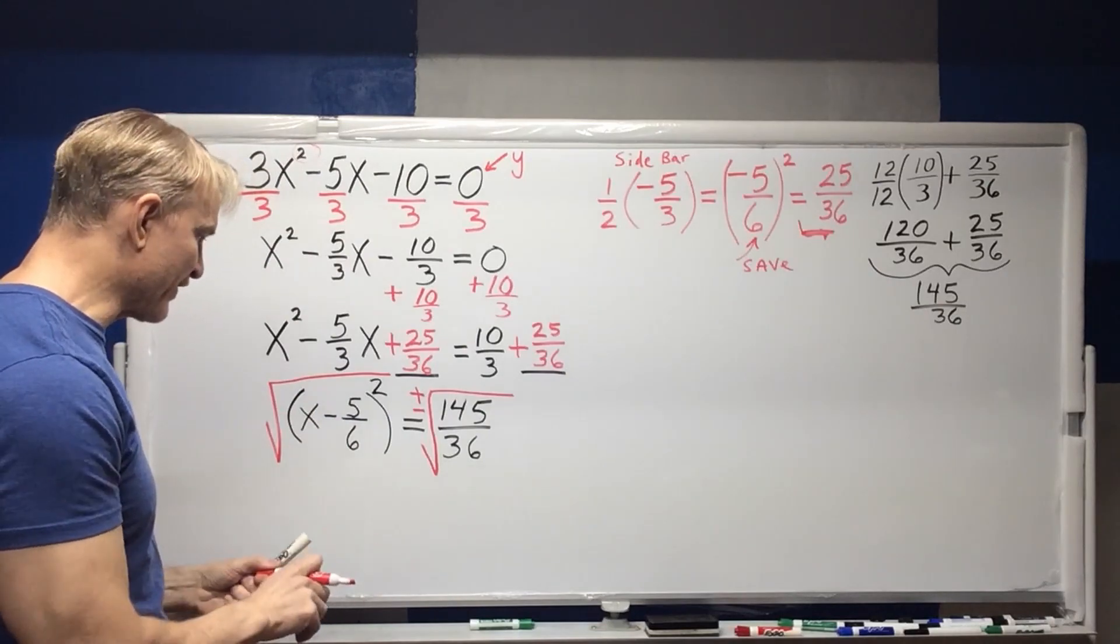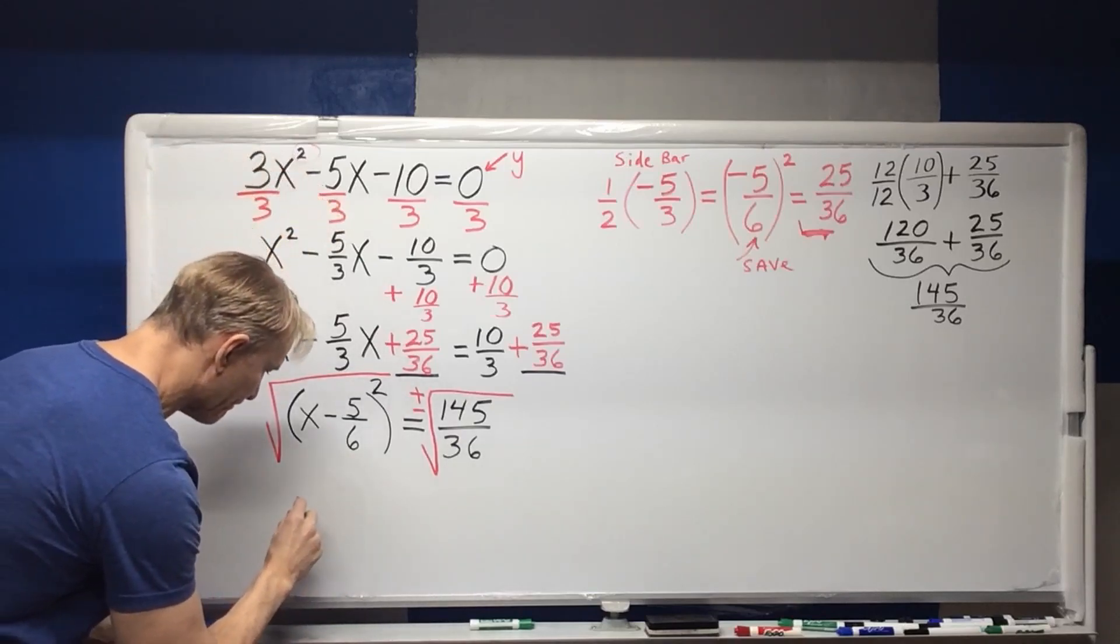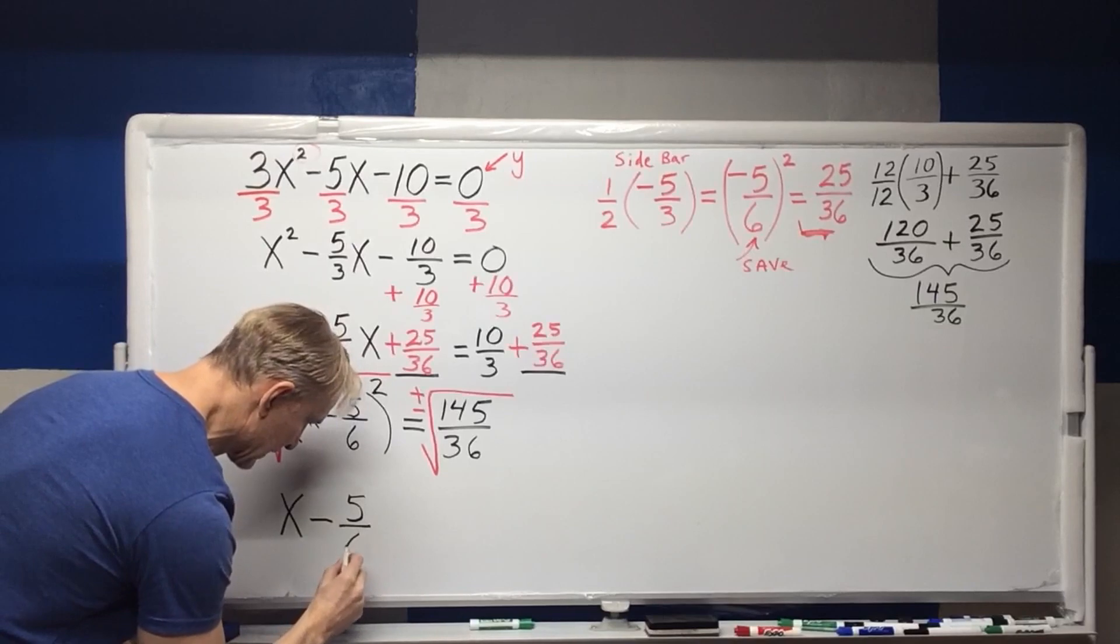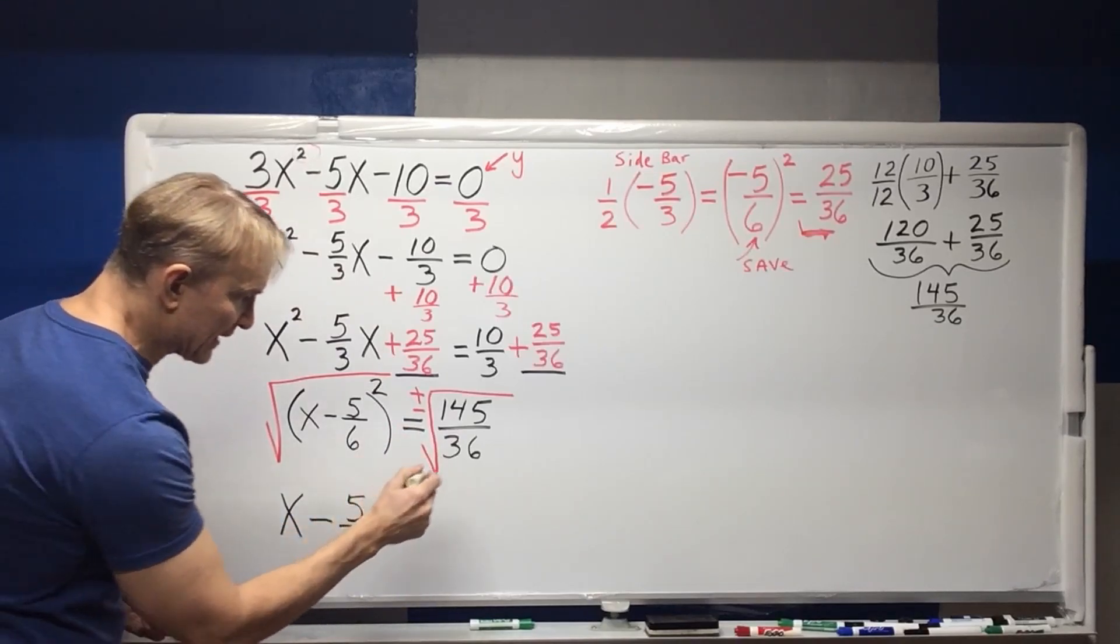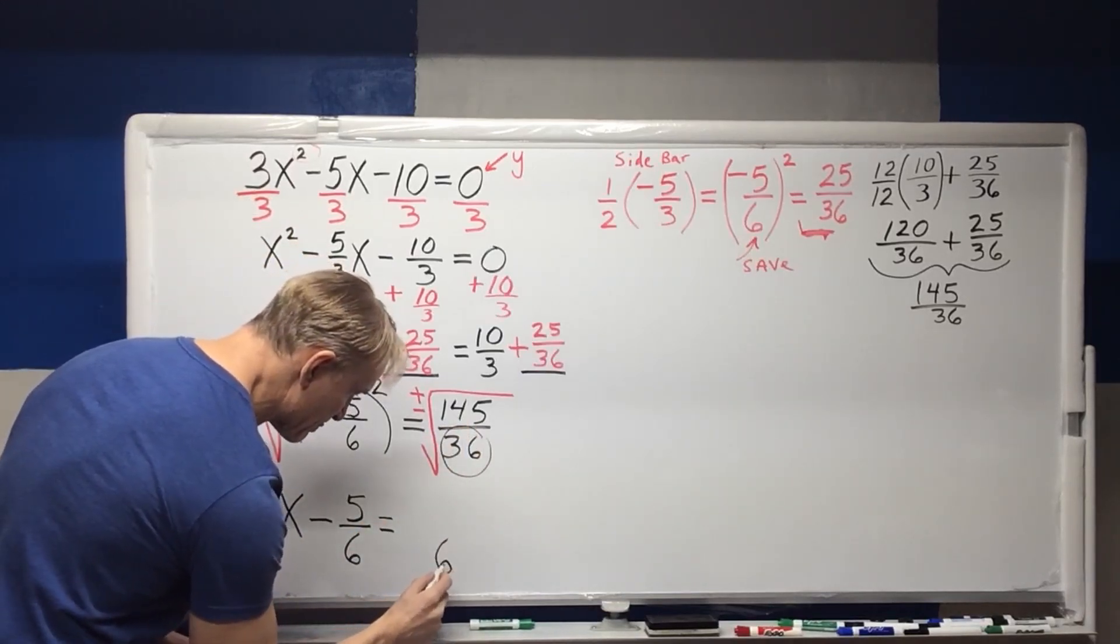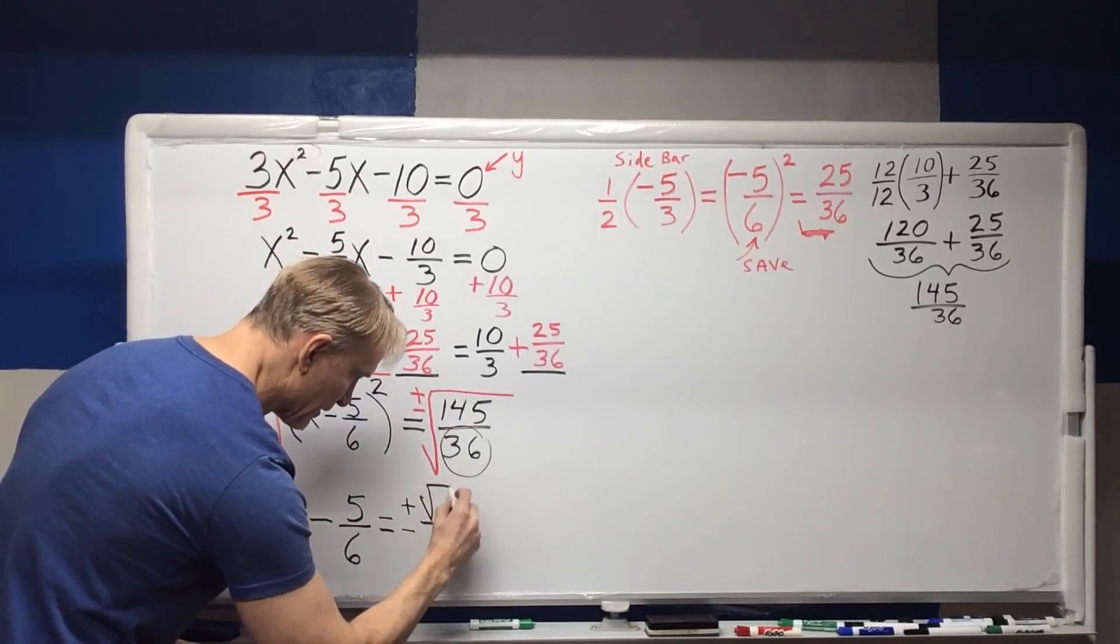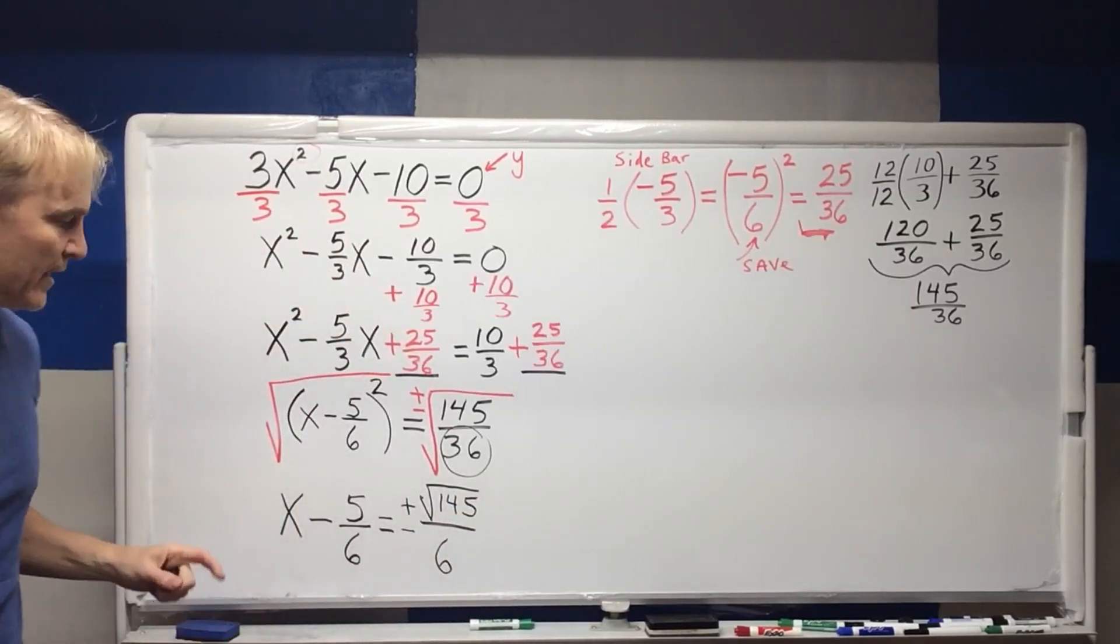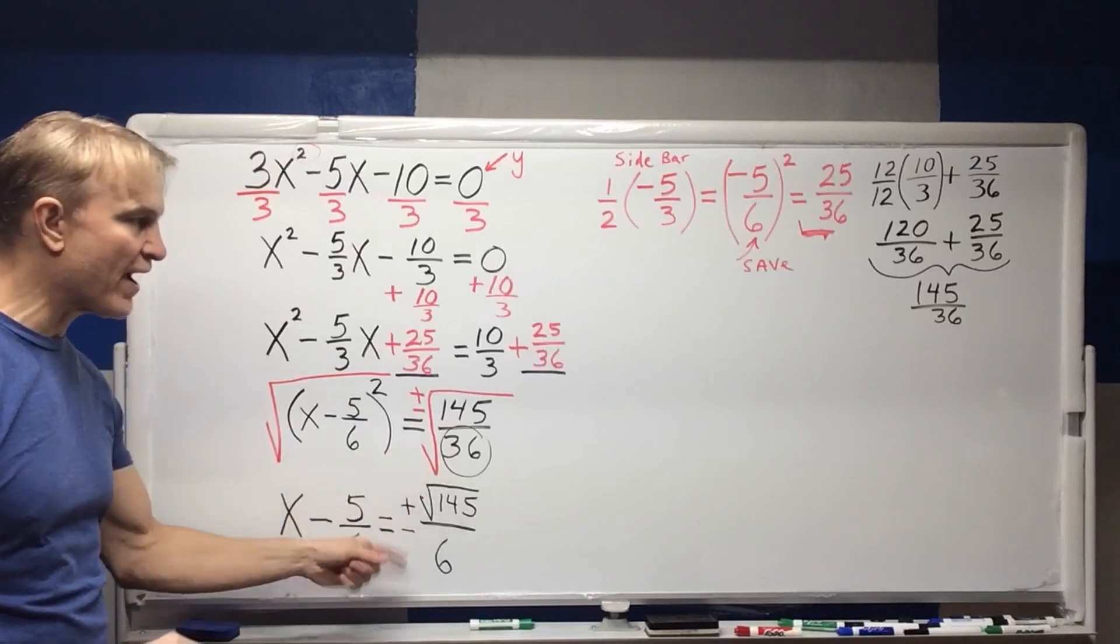All right, let's take the square root of this. If I take the square root of this, remember the square root undoes the square. So we are going to get x minus 5/6 equals. And let's clean this up right now. The square root of 36 here is 6 on the bottom. The plus or minus is still there. And then we can't get the 145 out of the square root. So essentially what we have right now is x minus 5/6 is equal to plus or minus the square root of 145 over 6.